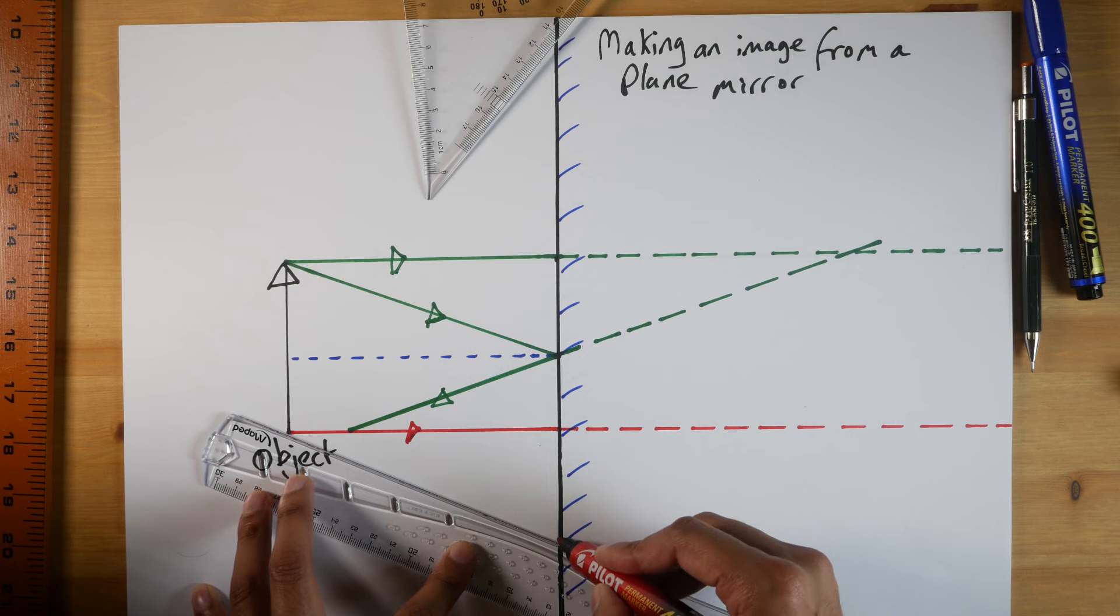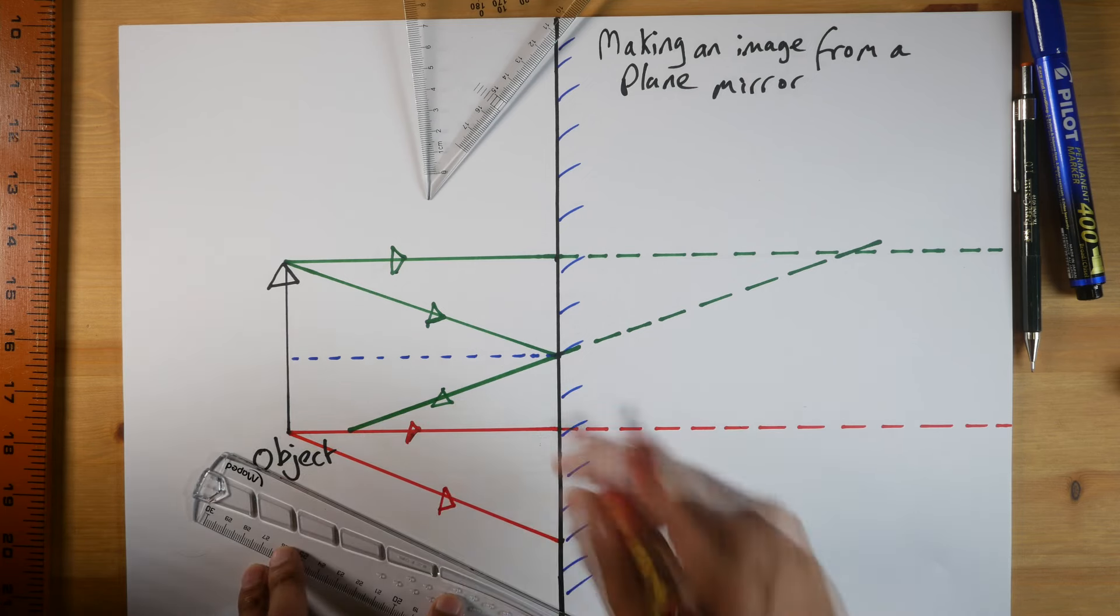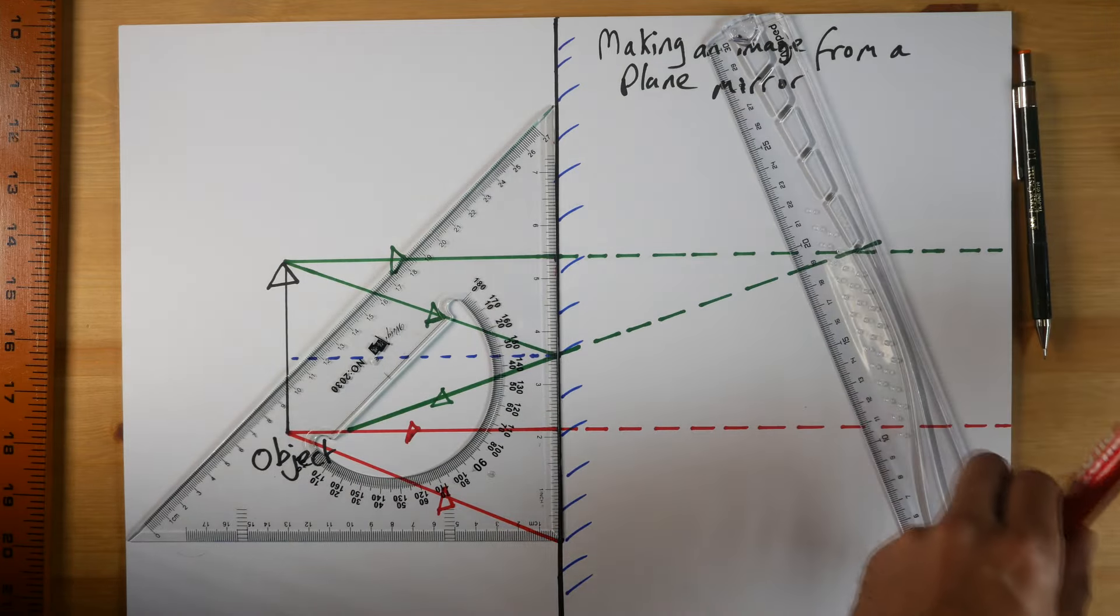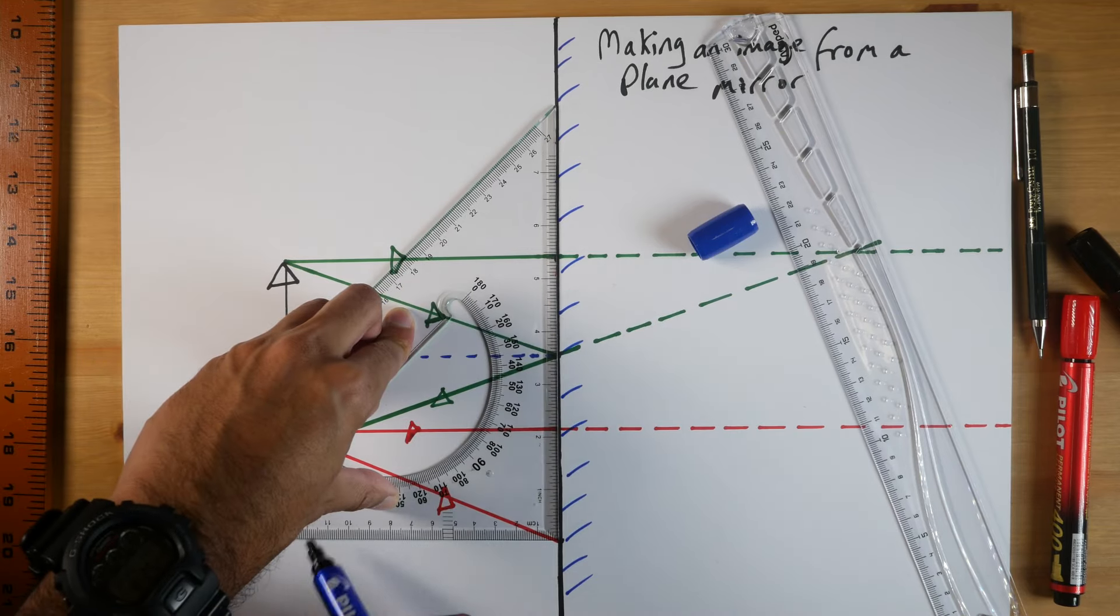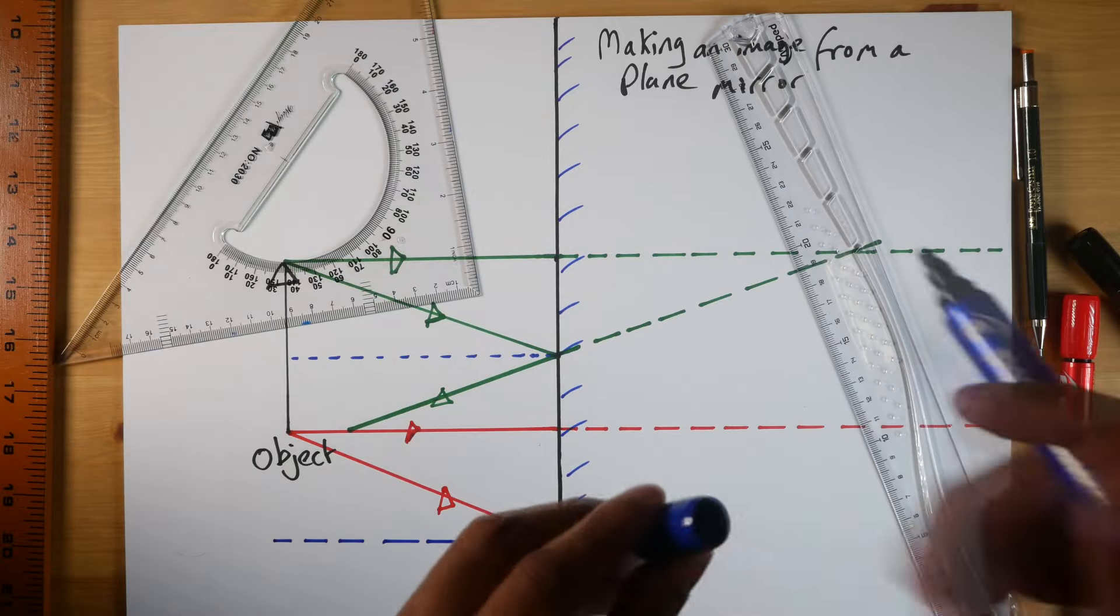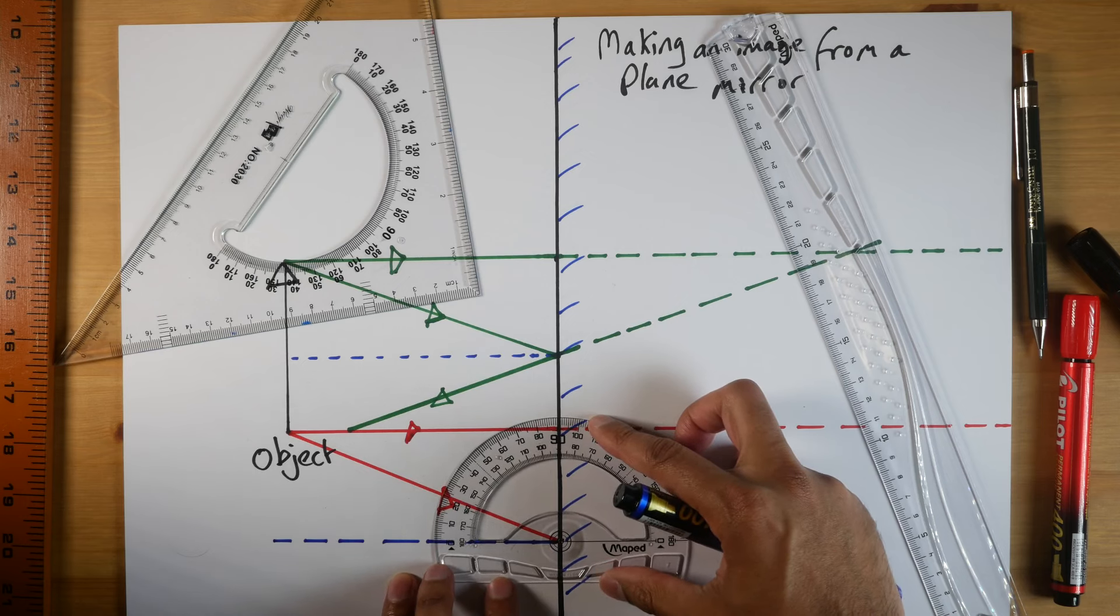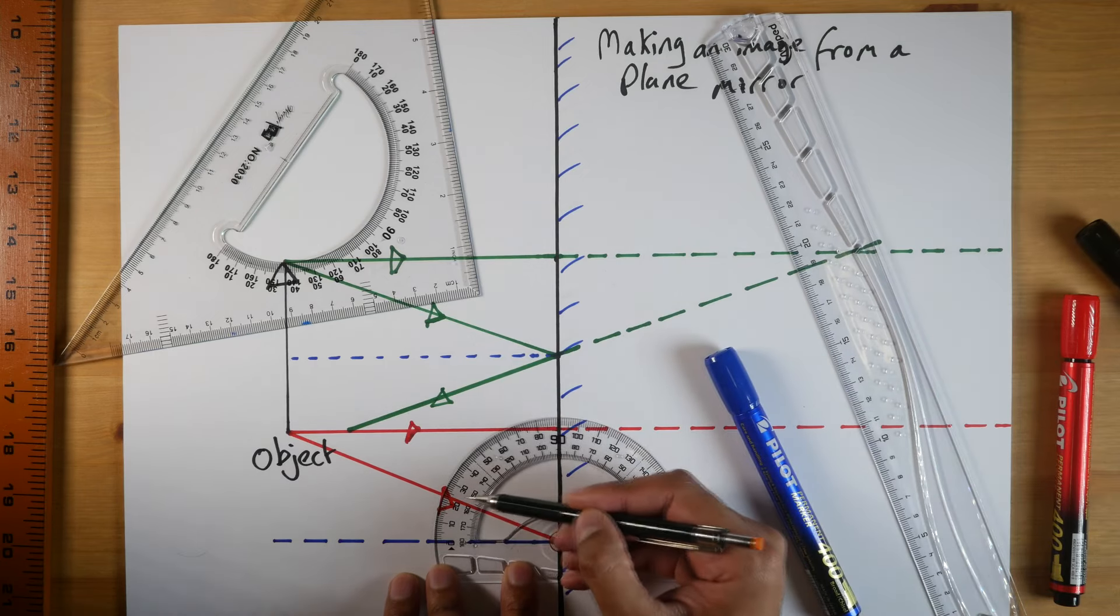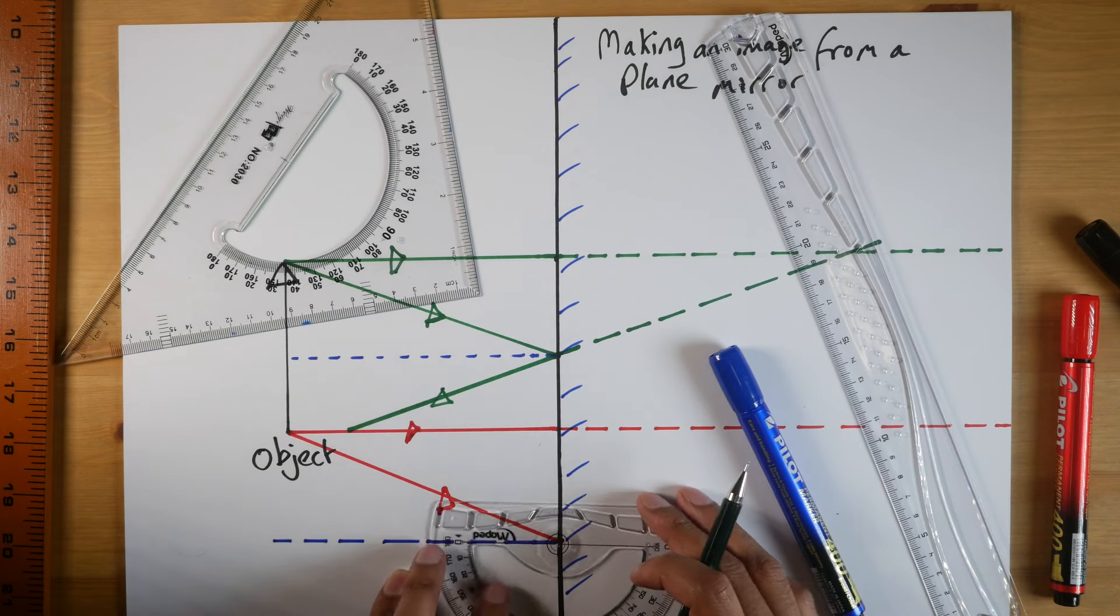Again, give it an arrow. Get the normal. So 90 degrees. Like so. Measure the angle. So this angle is... It's a thick line again, but it's 21, 22. It's about 23 degrees. So I've got to do 23 degrees down here.